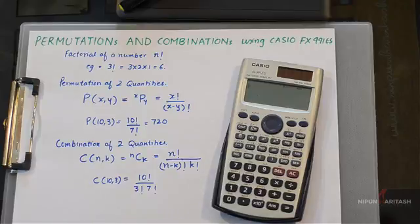In this quick episode I am going to tell you how you can calculate permutation and combinations using Casio FX991ES.